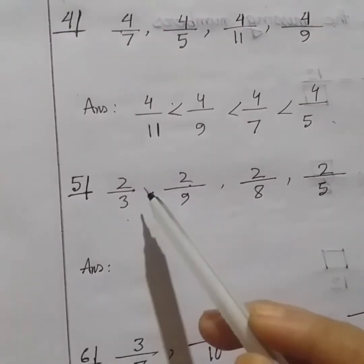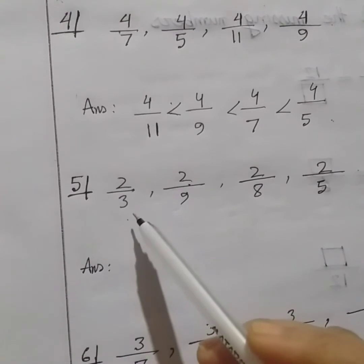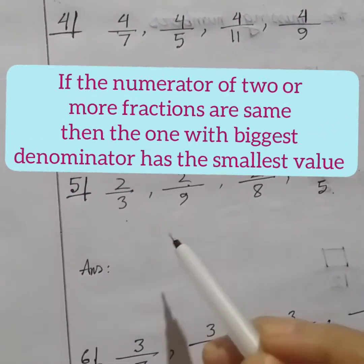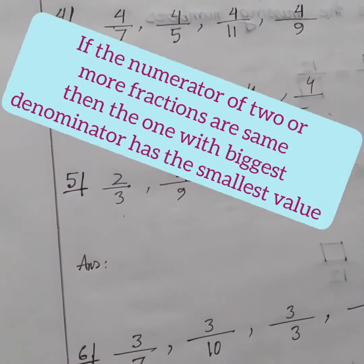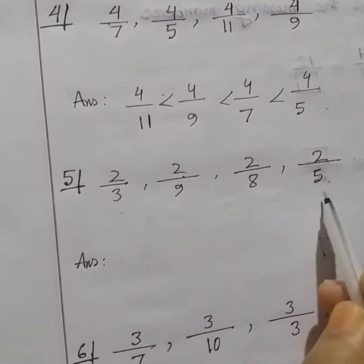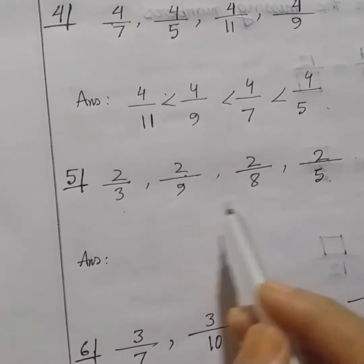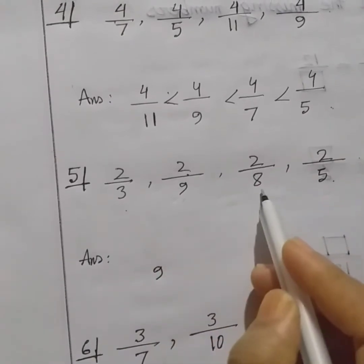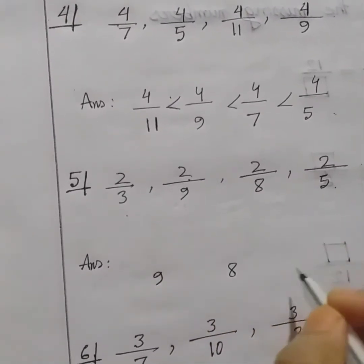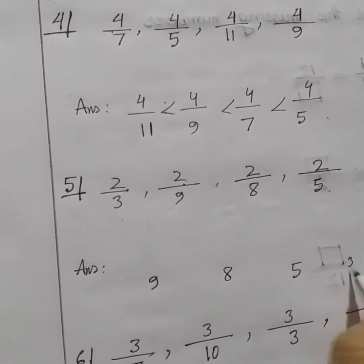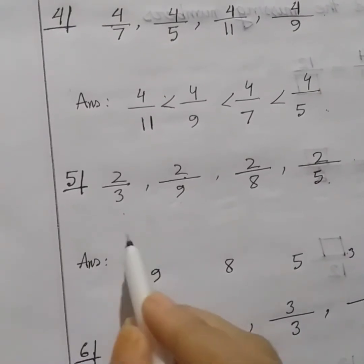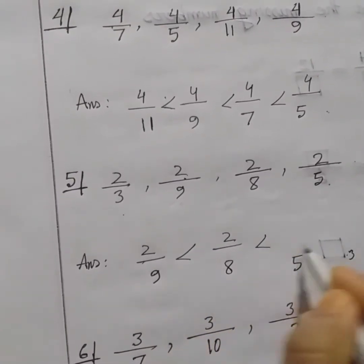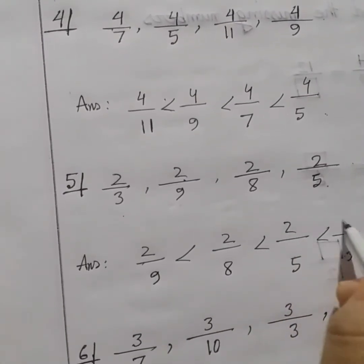Now try this one. Here all the numerators are the same: 2 over 3, 2 over 9, 2 over 8, and 2 over 5. So again we have to apply this rule. First we arrange the denominators from larger to smaller. Which one is largest? 9. So write 9, then 8, then 5, then 3. Our answer is: 2 over 9 is less than 2 over 8 is less than 2 over 5 is less than 2 over 3.